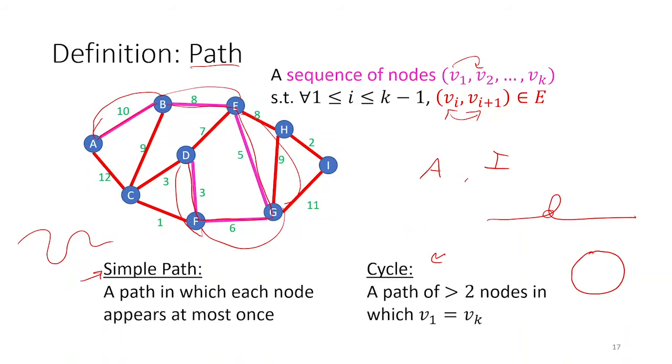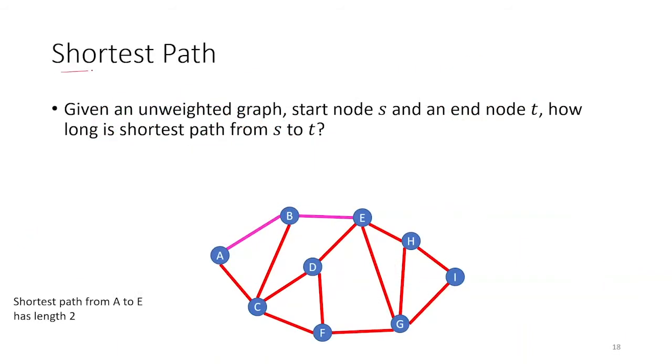So the first problem we're going to look at and try to figure out the runtime for is this shortest path problem. The shortest path problem says if I have a graph and you gave me a start node, let's call that S, and an end node, let's call that T, how long is the shortest path from S to T? So in this case, our input is three things: a graph, a start node, and an end node. And our output is one thing, which is a number. That number being the length of that longest path. We're not interested in the identity of that path, just the length of it.